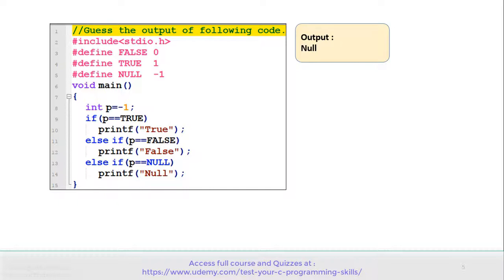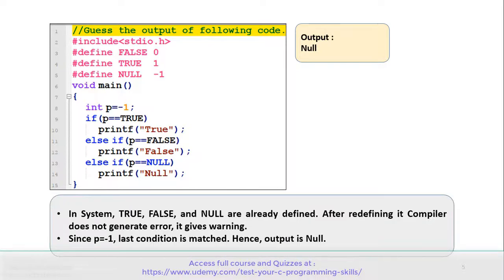Let's understand why we are getting null as output. Note that in the system, true, false, and null were already defined. After redefining them, the compiler does not generate an error but gives a warning. Since the value of p is equal to minus 1, the last condition is matched, and that's why the output is null.